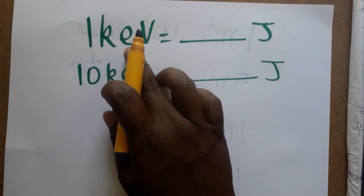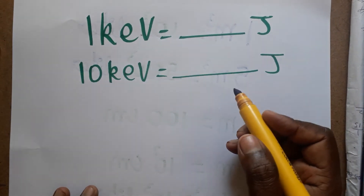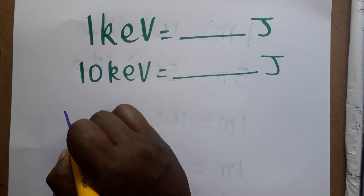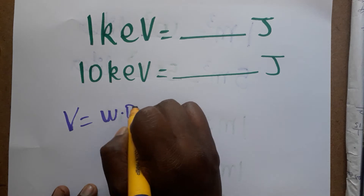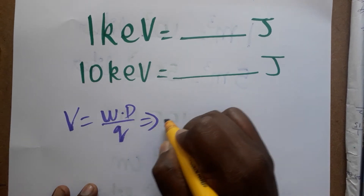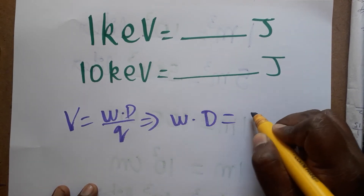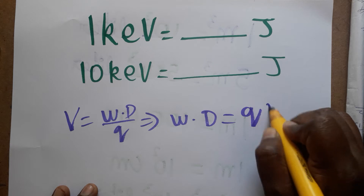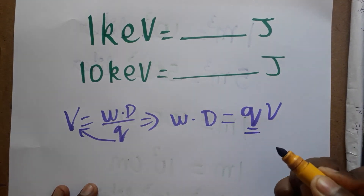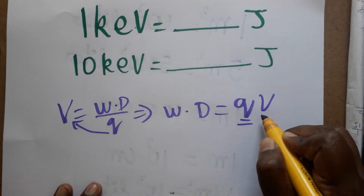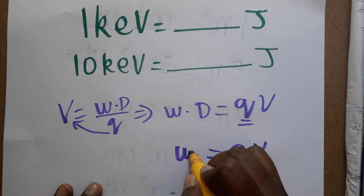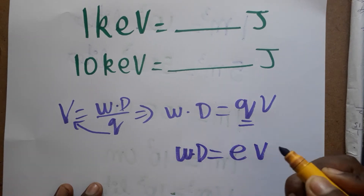1 kilo electron volt is equal to how many joules? Electron volt: voltage is equal to work done by charge. Work done is equal to charge into voltage, by cross multiplication. So electron is taken as the charge, and electron volt represents work done, which is energy.